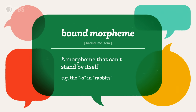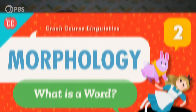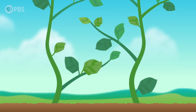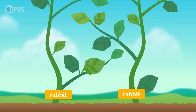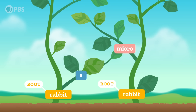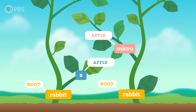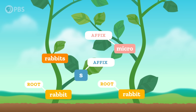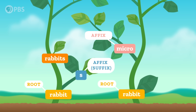Meanwhile, when we have a morpheme that can't stand by itself, like the -s in rabbits, that's a bound morpheme. Let's head over to the Thought Bubble to see more about how morphemes fit together. We can visualize morphemes as fitting together like the parts of a plant. In this metaphor, the most central part of a word is the root, and the other morphemes that are stuck or fixed onto it are affixes. So rabbits is made from the root rabbit and the affix -s. Since the -s affix in rabbits comes after the root, we can call it a suffix.